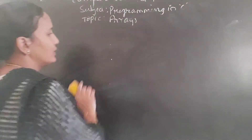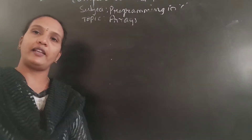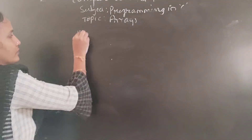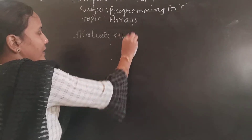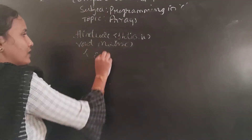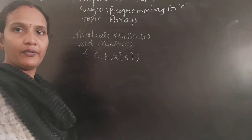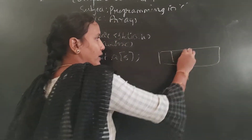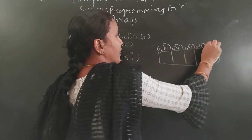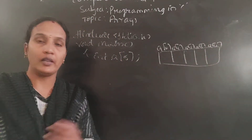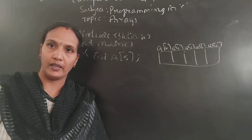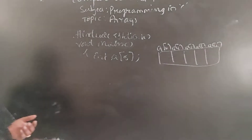Now, we will take the array elements at runtime — we won't initialize the array elements in the program itself. So we declare int a[5], which gives 5 blocks: A of 0, A of 1, A of 2, A of 3, A of 4, but no values are assigned. If I assign values here, the values of those elements will be fixed. So I don't want to fix the value — every time I want to give a new value. For that purpose, I give a message to the user: printf 'Enter array elements'.